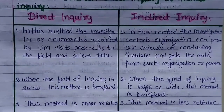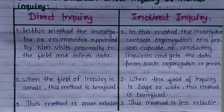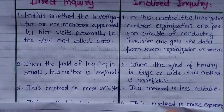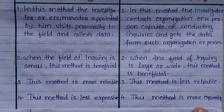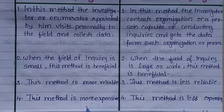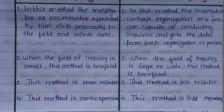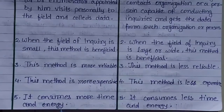Indirect inquiry is less reliable because the work is assigned to someone else and we cannot fully trust how they perform it. Regarding cost: in direct inquiry, going house to house is time consuming and enumerators need to be appointed, increasing expenditure. Indirect inquiry is less expensive. Last point: direct inquiry consumes more time and energy; indirect inquiry consumes less time and energy.